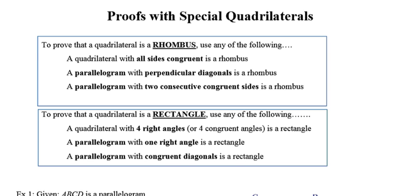To prove that a quadrilateral is a rhombus, you can use any one of three reasons. You can show that your quadrilateral has all sides congruent, meeting the definition of a rhombus. Option two is to show that your figure is a parallelogram with perpendicular diagonals — not just any quadrilateral, but a parallelogram with perpendicular diagonals. Or you can show that your figure is a parallelogram where two consecutive sides are congruent, making it a rhombus.